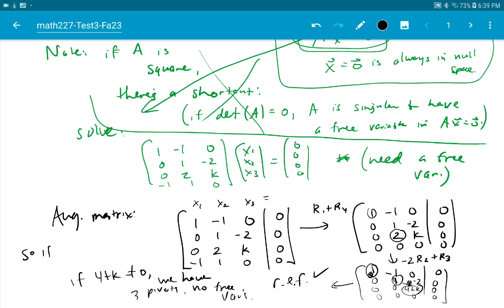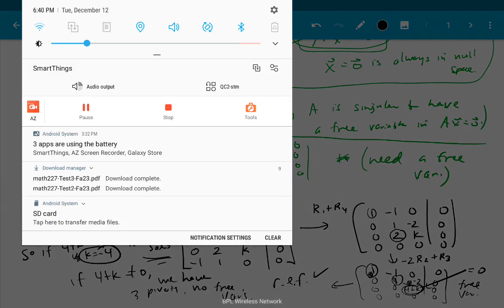So we need 4 plus k to equal 0. If 4 plus k equals 0, then this is 0 and we get a free variable. Right? Because we would be missing a pivot. If you have a free variable, you have infinitely many solutions, non-zero solutions. Of course, that means k would equal negative 4. That's the answer. k is negative 4 will give you non-zero solutions, non-trivial solutions. That's it.